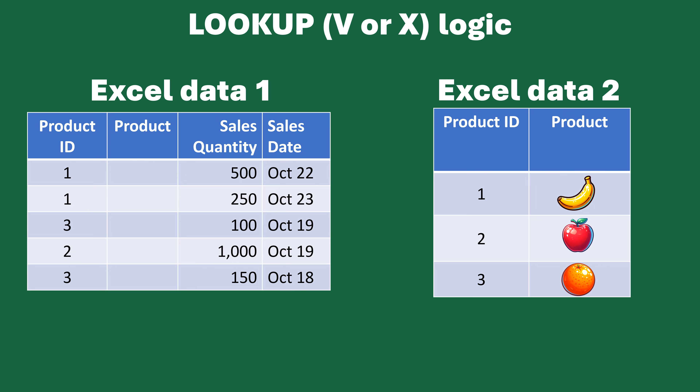What you might start doing is adding an extra field in the data on the left where you want to have either a product description or some other data brought over from another data table or data source and brought into your main file. That's what we're going to be going over today — understanding the logic of this. Before we get into how we actually do it with VLOOKUP and XLOOKUP, let's think about how we would do this just as an individual if you had two pieces of paper in front of you.